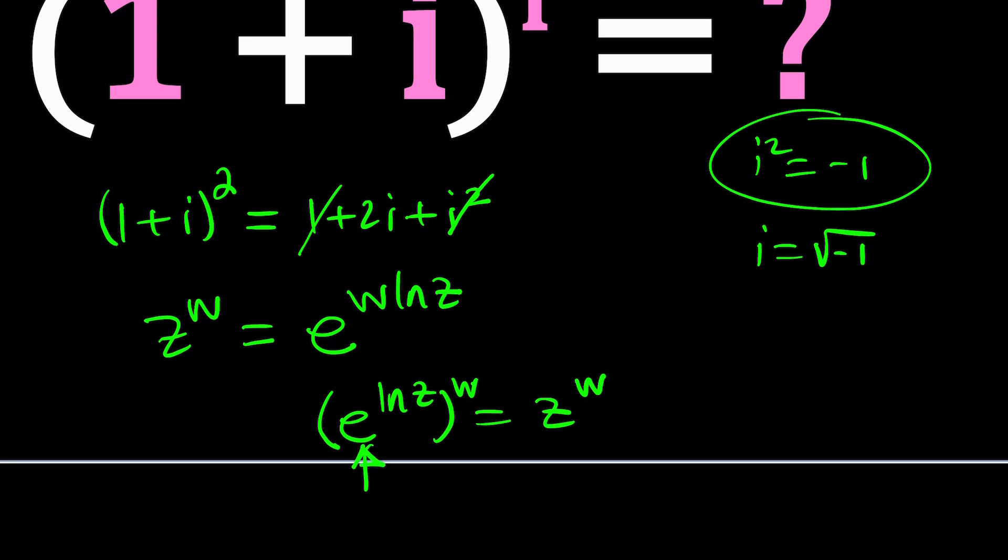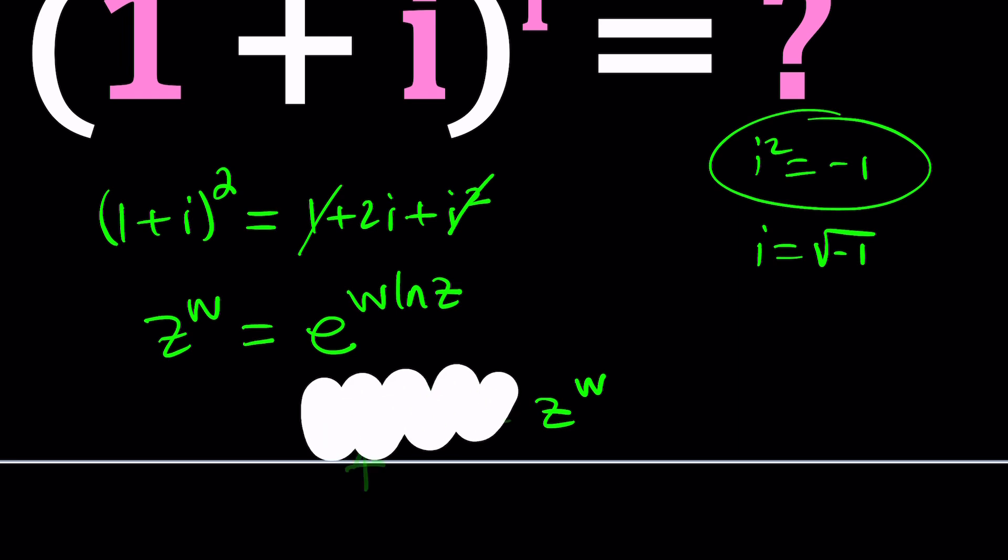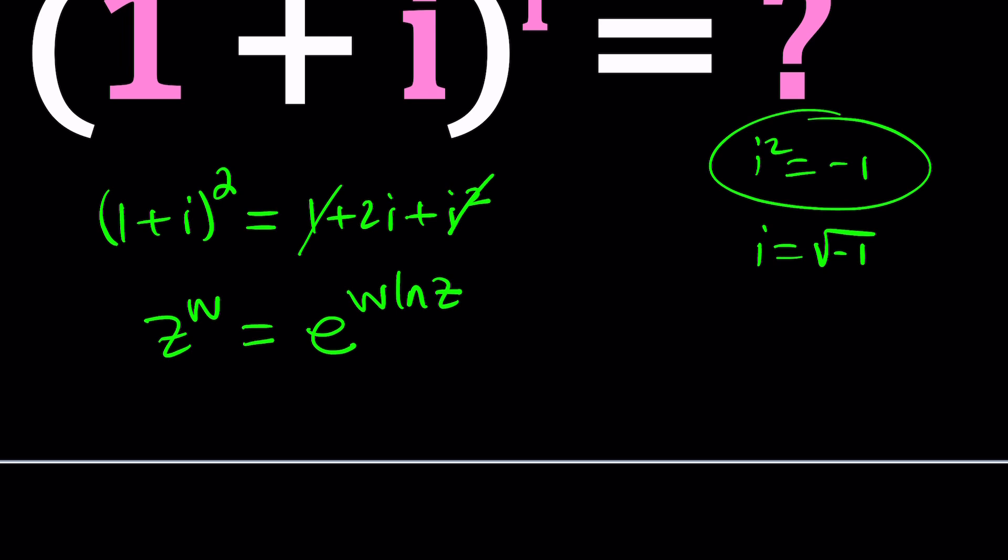Is it always like that? Yes, it doesn't always work for all bases. But in the case of e, that seems to be working. Anyways, you get the idea. This is our formula. Let's go ahead and use it. But this brings up another question. How do you ln a complex number? We'll talk about that next.